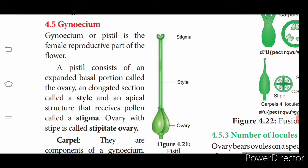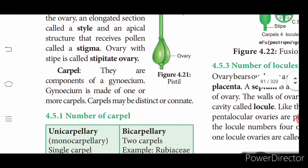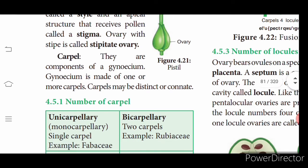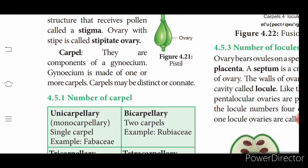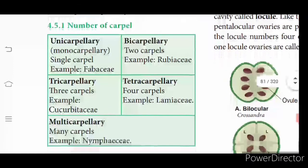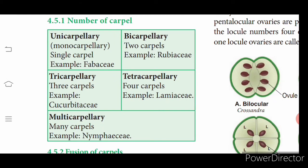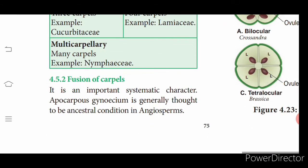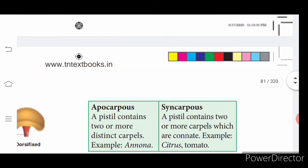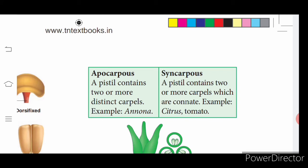Anther attachment types: basifixed — base of anther attached to tip of filament; dorsifixed — apex of filament attached to dorsal side of anther; versatile — filament attached at anther midpoint; adnate — filament continues from base to apex of anther. The gynoecium's pistil consists of an expanded basal portion called the ovary, an elongated style, and an apical stigma. Based on the number of carpels: unicarpellary, bicarpellary, tricarpellary, tetracarpellary, or multicarpellary.